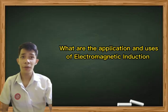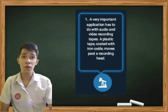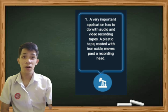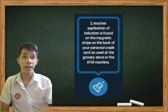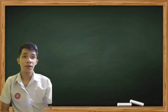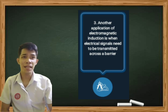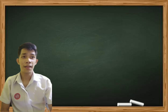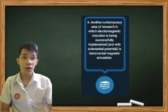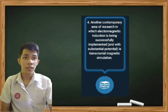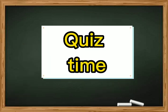What are the applications and uses of electromagnetic induction? First, a very important application has to do with audio and video recording tapes — a plastic tape coated with iron oxide moves past a recording head. Second, another application is found on the magnetic stripe on the back of your personal credit card, as used at the grocery store or the ATM machine. Third, electromagnetic induction is used when electrical signals need to be transmitted across a barrier. Lastly, a contemporary area of research is transcranial magnetic stimulation.